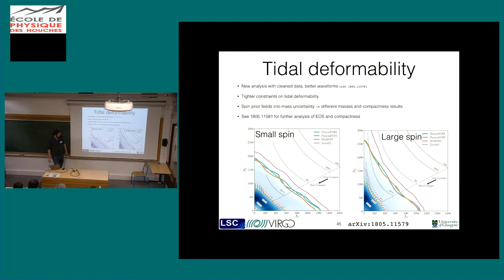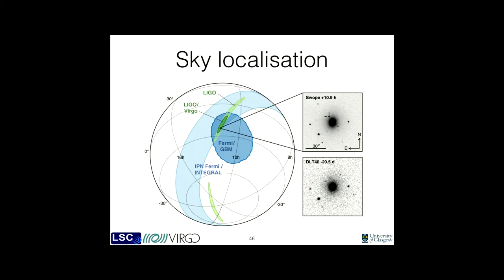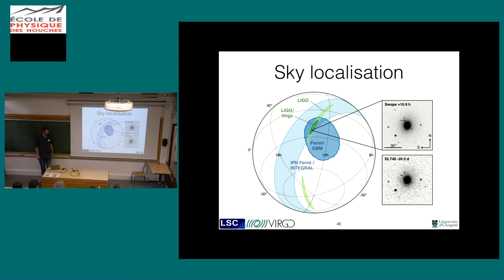There's plenty of details in the updated analysis, and also a specific paper on the single equation of state that you can look up. The point is that these are difficult parameters to measure. The tidal parameters come in at a very high order in the post-Newtonian formula, so there's actually not a lot of information there and the constraints are pretty weak. Moving on, we also looked at sky localization. Based on the fact that the effective bandwidth of a binary neutron star system is much larger, this allows the sky location to be constrained much more accurately.